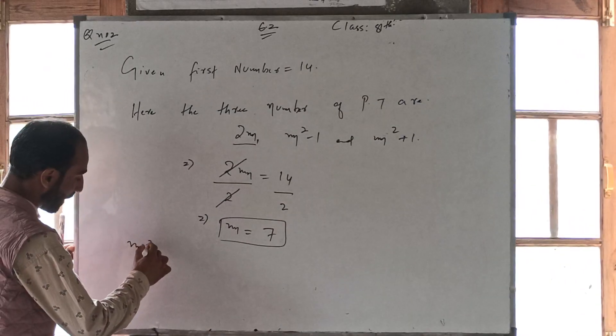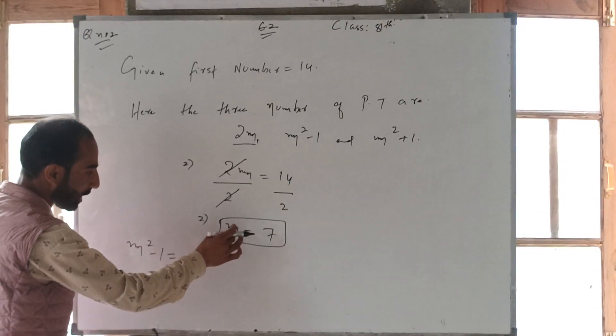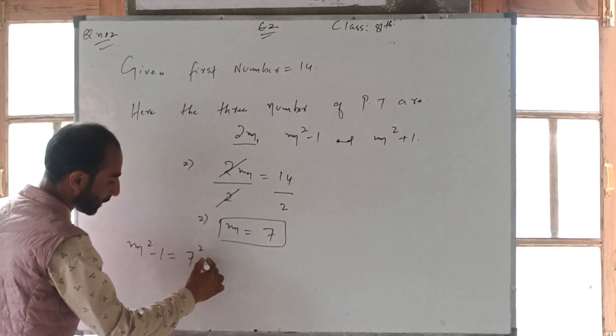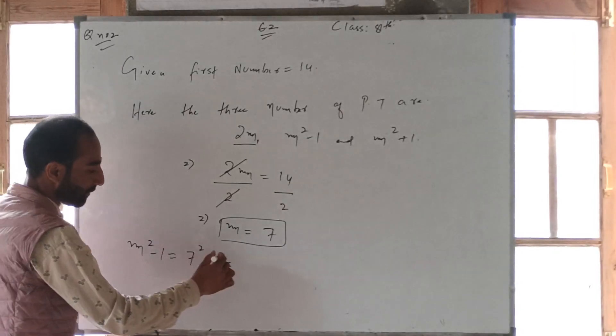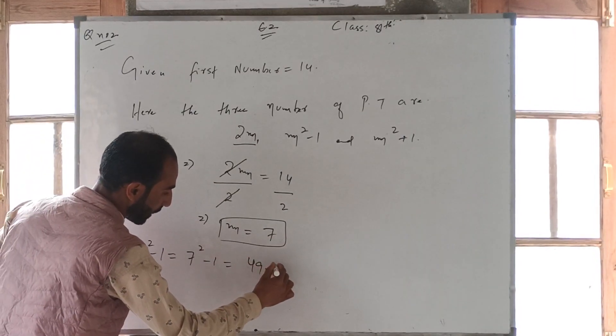So we have to take m square minus 1 is equal to m. Our 7 is equal to m, here we have to take 7 square. That is 7 square is equal to 49 minus 1. That is 48.